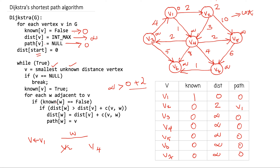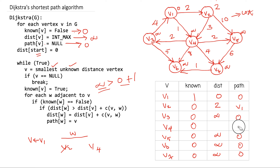Next we consider v4, which is also unknown. We check whether dist(v4) > dist(v1) + cost(v1, v4): infinity > 0 + 1, which is true. So we update dist(v4) to 1 and set path(v4) = v1. I update these values in both the table and the diagram.